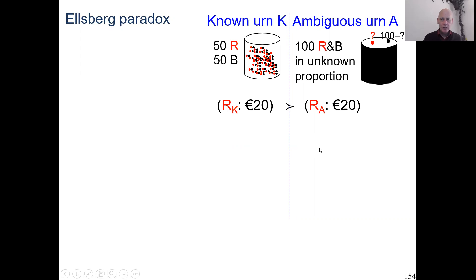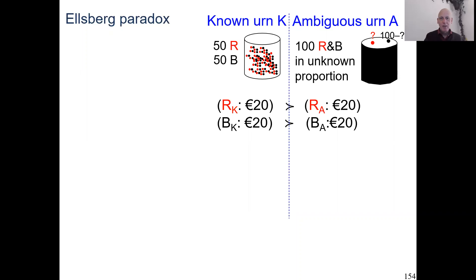We can do the same story with black — red or black is the same — so also with black, people rather gamble on the known urn than on the unknown urn. Now, Ellsberg didn't actually do the experiment; it was a thought experiment. He said of course this will happen, and many experiments after have shown that indeed it does happen.